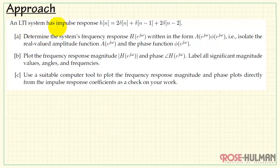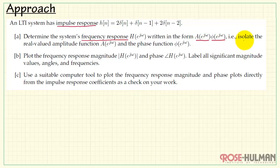Here we have a linear time-invariant system with an impulse response H of n. In part A, we are looking for the system's frequency response written in a particular form, where we isolate the real-valued amplitude function and the phase function.